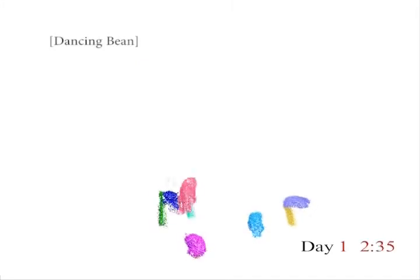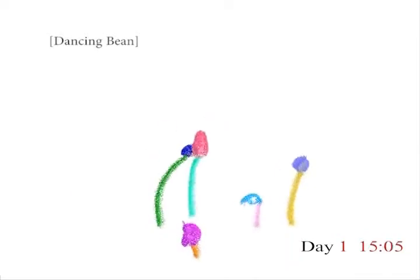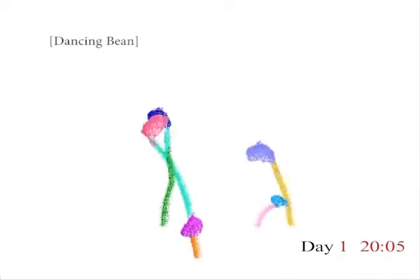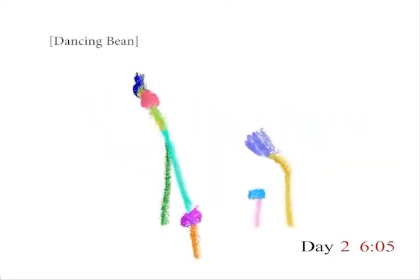Here we show a dancing bean and the event detection. Due to the delicate stem structure of the plant, it demonstrates significant body movement during its growth. Yet our method is still able to track and detect the critical event movements.